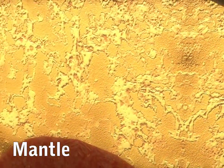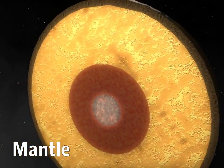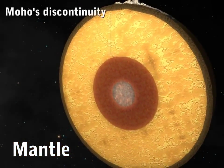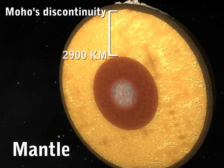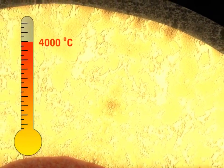The mantle forms the main mass of the earth. It is the layer just under the crust. It extends from the Mohorovičić discontinuity to a depth of about 2,900 kilometers. The mantle is a partly molten layer and can have temperatures reaching 4,000 degrees Celsius.